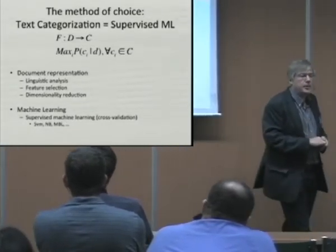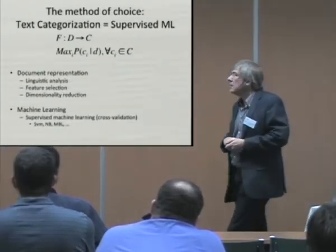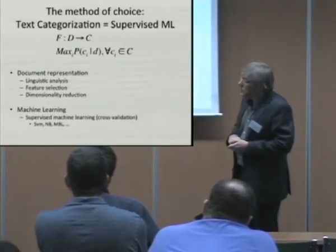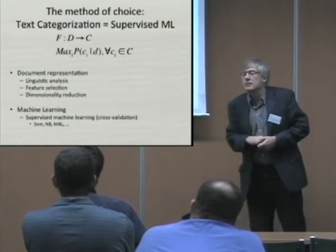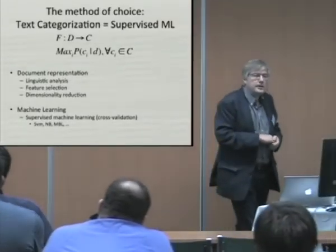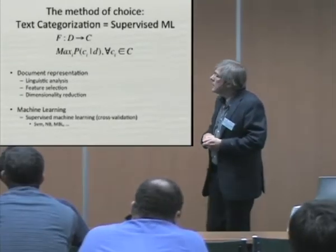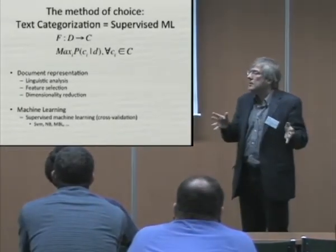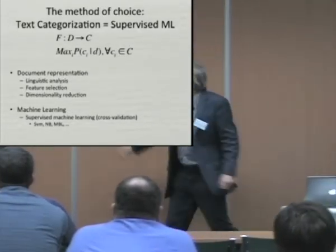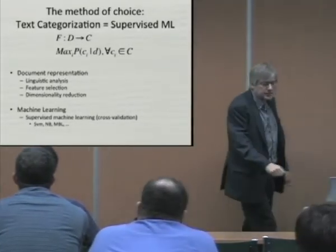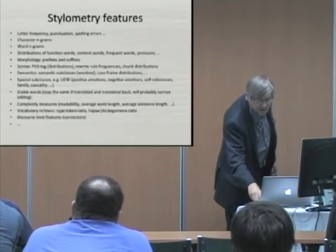The big problem is in the document representations. Which features will be the best to solve these different tasks? Will we make do with only bags of words, bags of function words? Will we need more deeper analysis, semantic information, pragmatic information, etc.? Because all that can potentially belong to the stylome. The machine learning methodology and systems will be basically the same as for other text categorization problems.